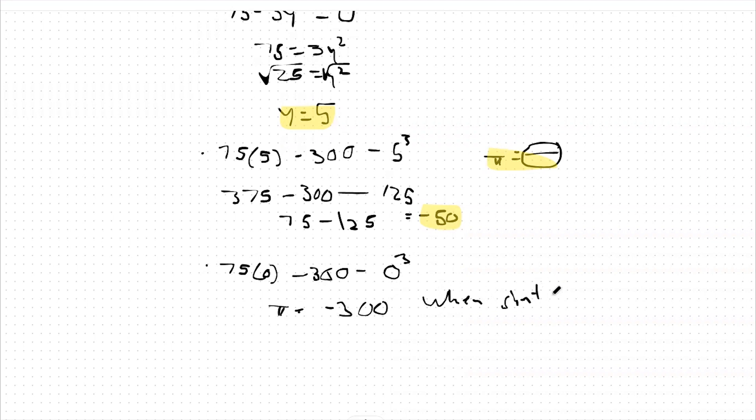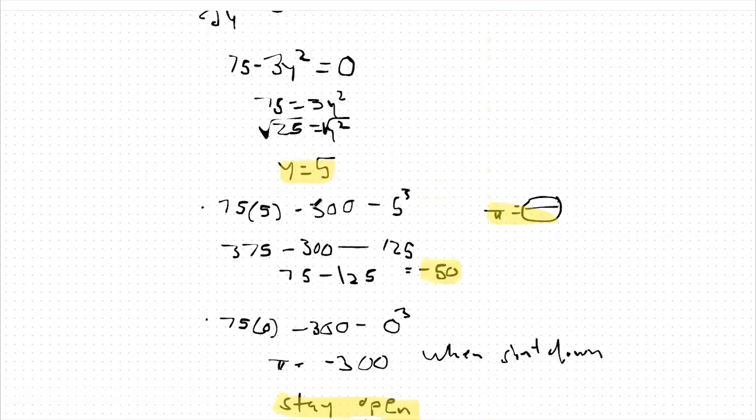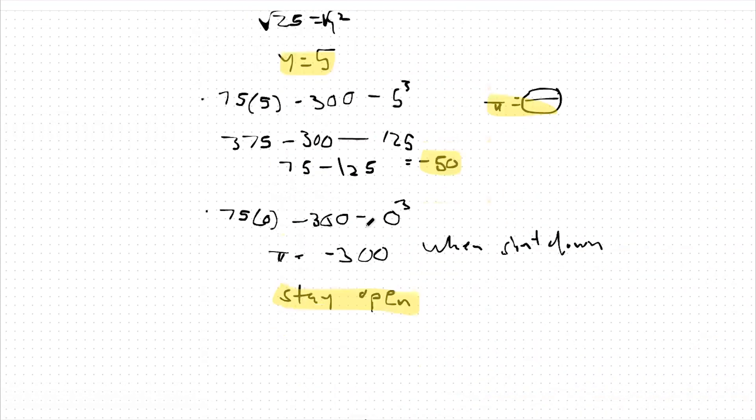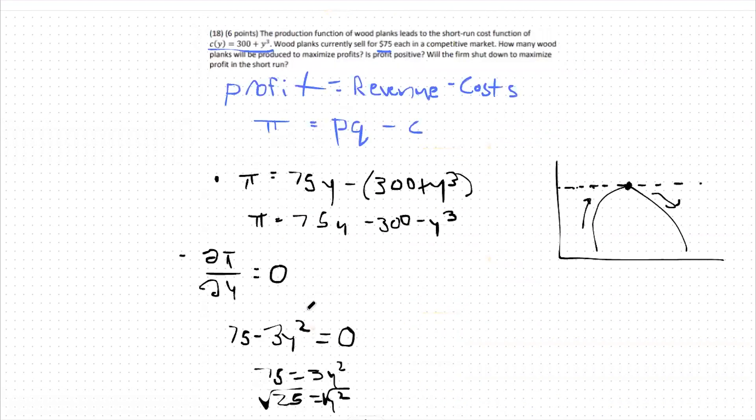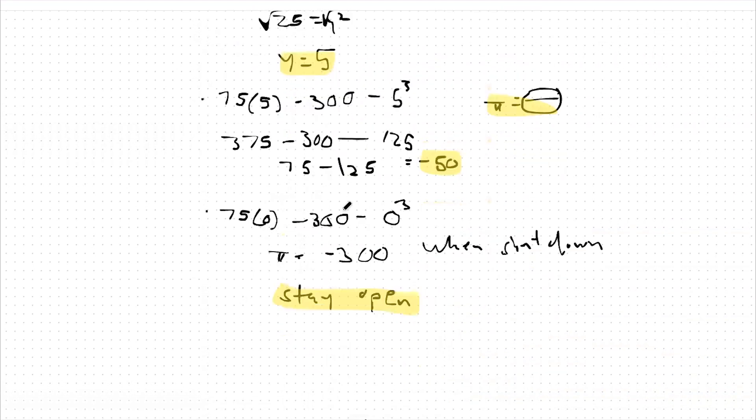Therefore, it makes more sense to stay open. We get a profit of negative 50 compared to this negative 300 profit if we shut down. So even though we're making a negative profit, on the margin we're actually making enough off of our wood planks in this case to be able to work away at this debt we've incurred as our fixed cost. So in the long run we may make a different decision, but in the short run we will stay open.